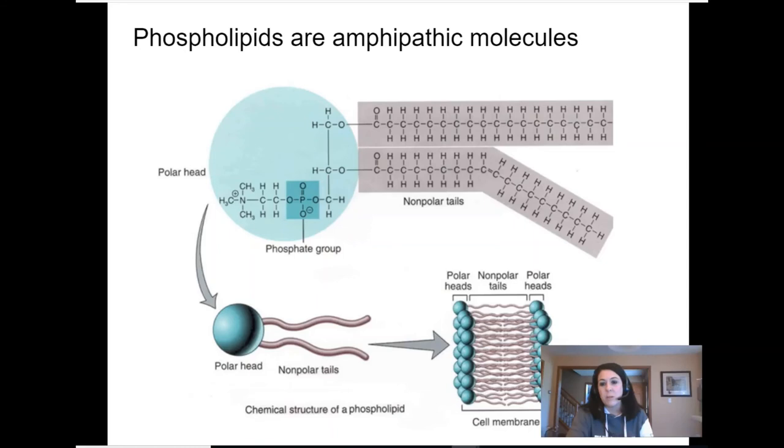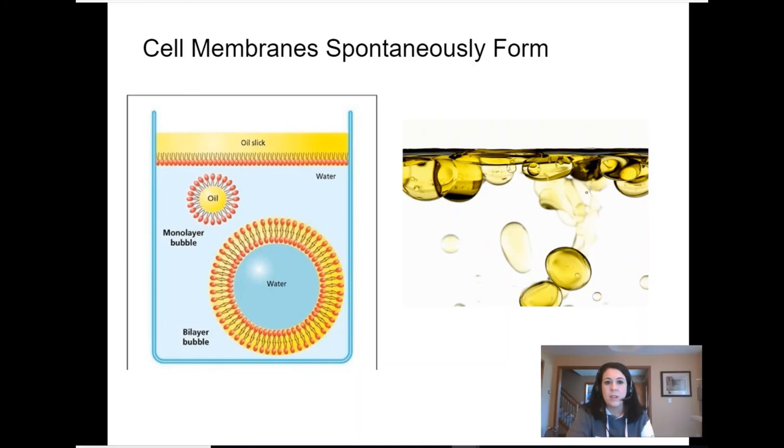We'll talk about other amphipathic molecules like phospholipids and how they're important because they make up the cell membrane. They're amphipathic, meaning they have a polar head with the phosphate group in green and the non-polar hydrophobic hydrocarbon tails. These are really important in cell membrane formation.